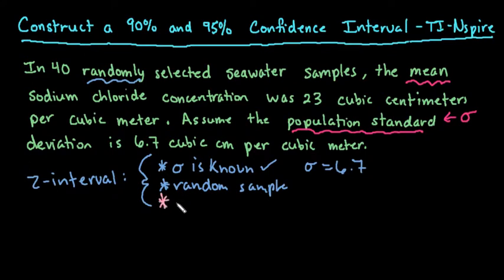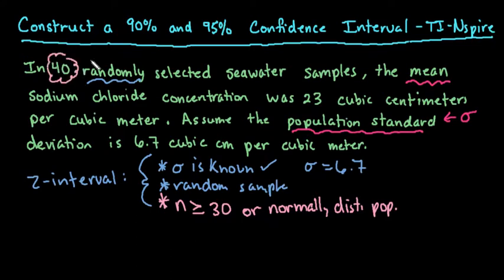Remember, in order for the central limit theorem to kick in, our sample size either has to be greater than or equal to 30, or it has to start from a normally distributed population. And because it tells us that our sample size is 40, this is met for any type of distribution, so it doesn't matter whether this is normally distributed or not. So since n equals 40 is greater than or equal to 30, that tells us we can use the z interval.